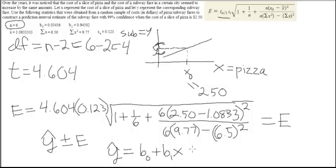So in this case you just have to plug in all the bits and pieces that we have: 0.03456 plus 0.9450 times our x. And again, we're doing it around the x zero that they gave us, so it's times 2.5. And that should be all you would need to do to find confidence intervals for y.